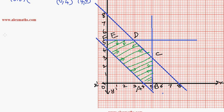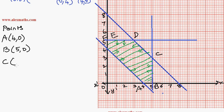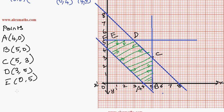We label the corner points of the feasible region as A, B, C, D, E, and F. Reading from the graph: A is (4, 0), B is (5, 0), C is (5, 3), D is (3, 5), E is (0, 5), and F is (0, 4).